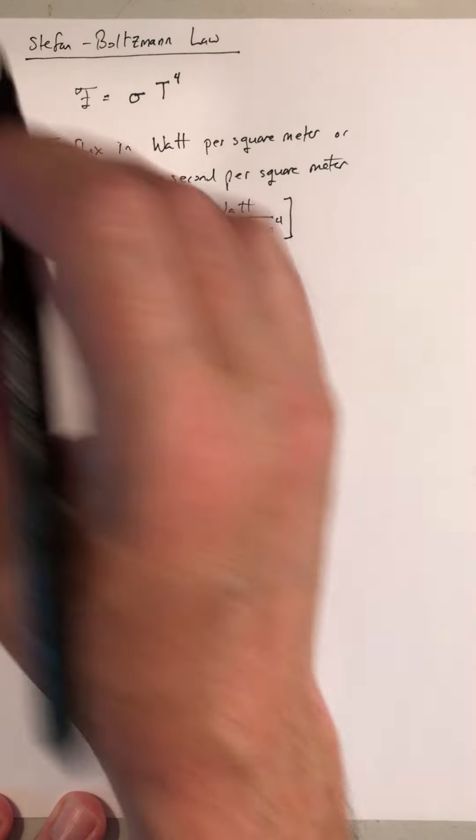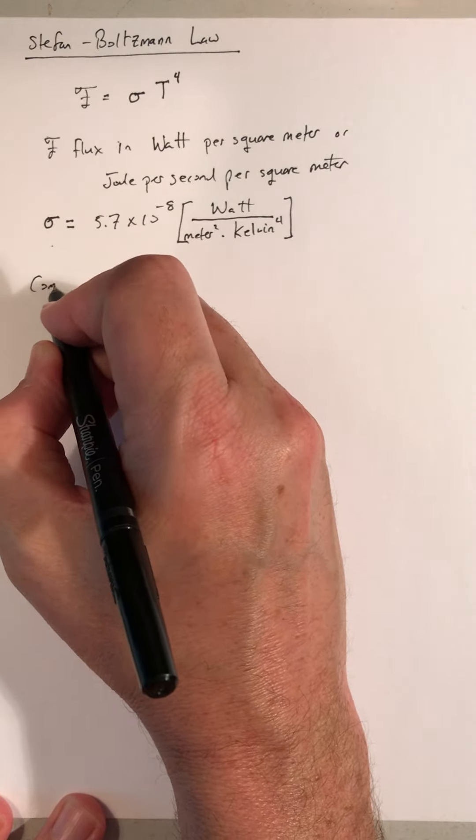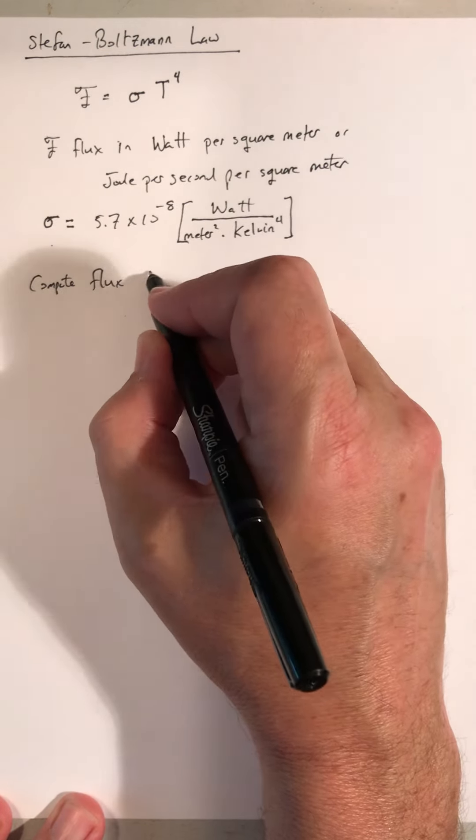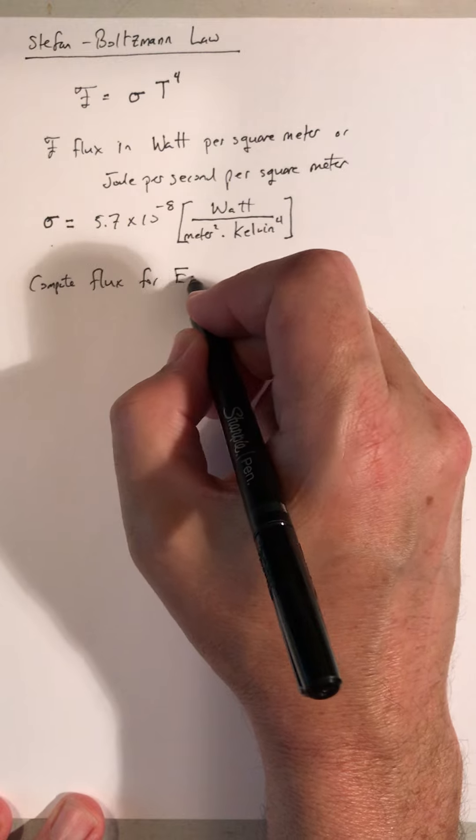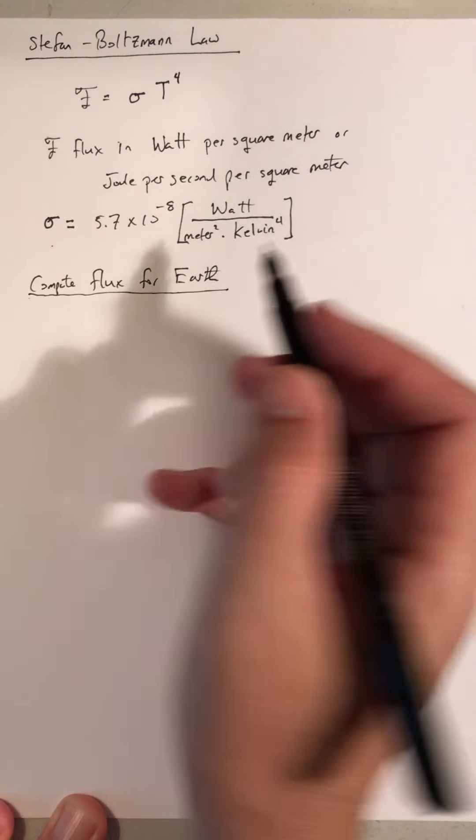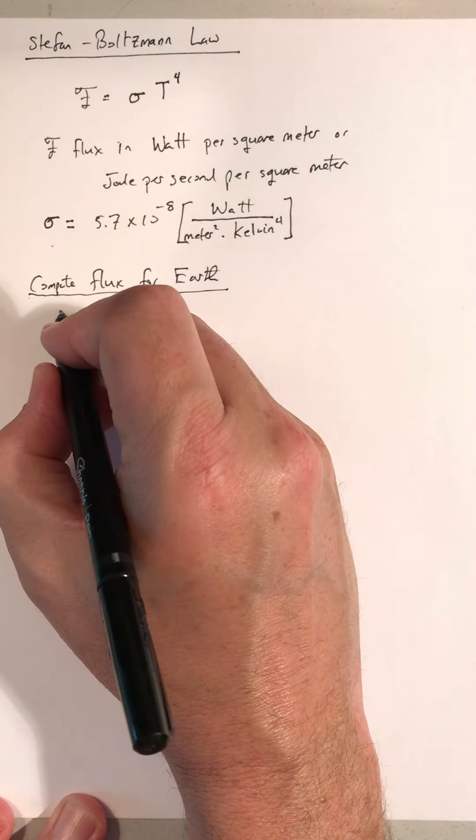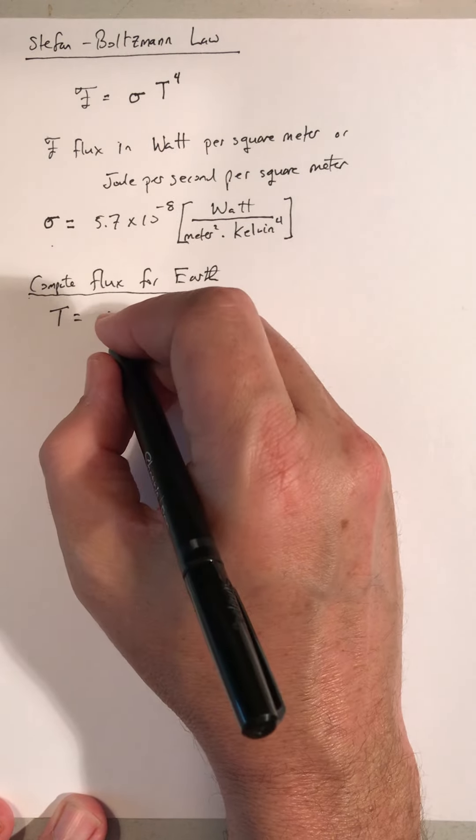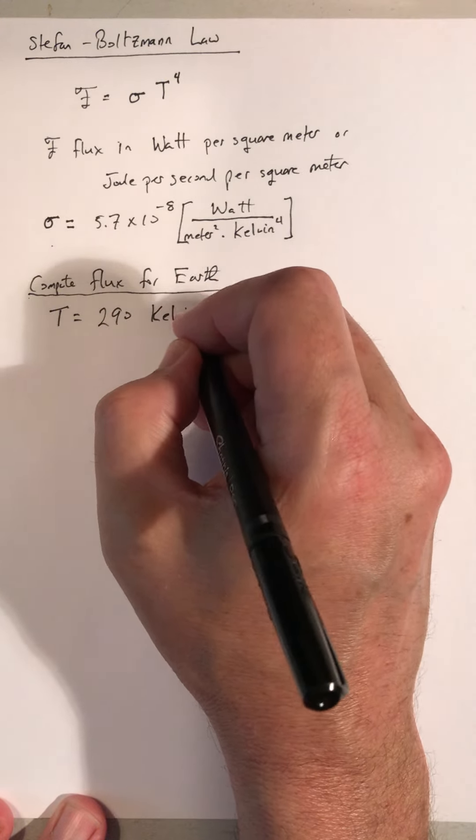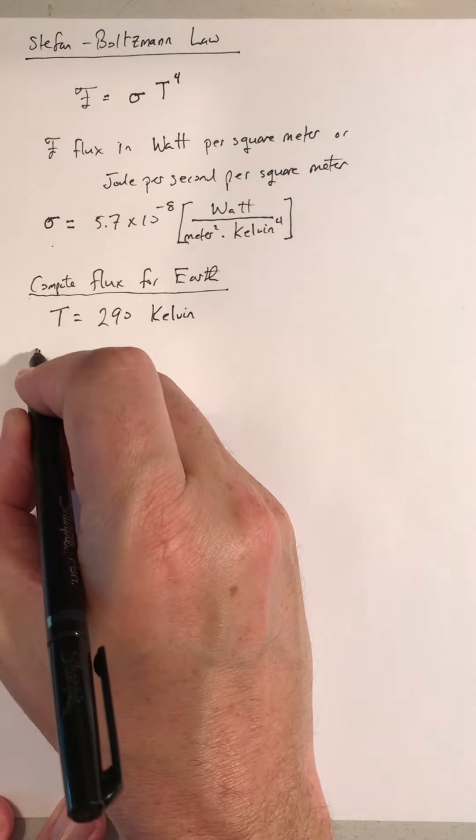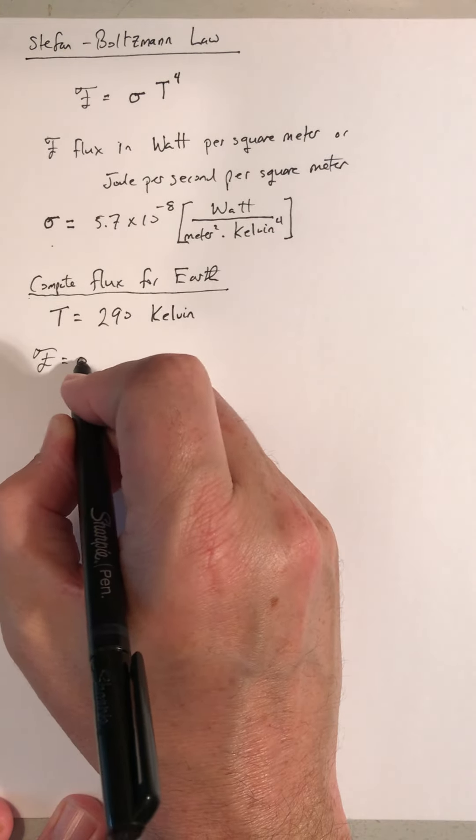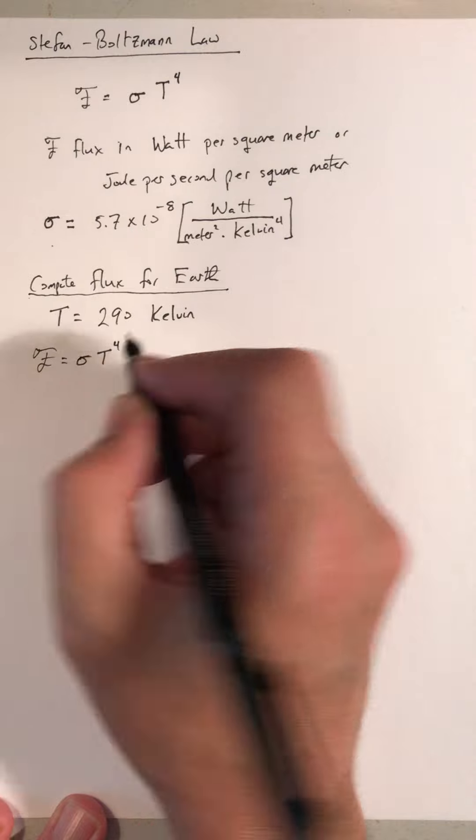So let's do an example for Earth. What is the flux for planet Earth as it is radiating to cool off? So let's take average temperature for the surface of Earth, 290 Kelvin. And just straightforward, calculate what the flux is. Sigma T to the fourth.